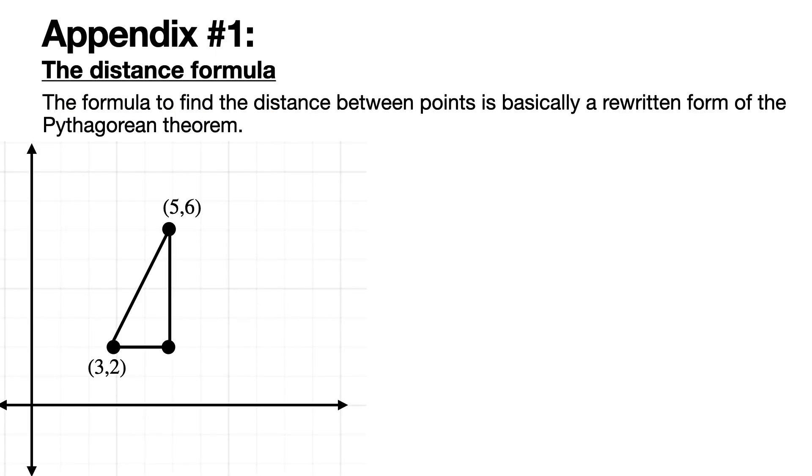Appendix number one: the distance formula. If you want to find the distance between two points in 2D space, the formula to find the distance is basically the Pythagorean theorem. We're going to do this twice so you get the idea. The Pythagorean theorem is a squared plus b squared equals c squared. The distances are clearly two and four, so you just plug them into the formula.